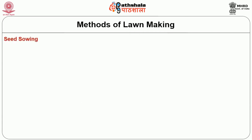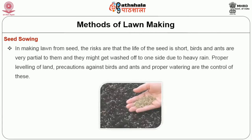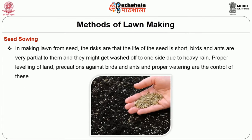First we will discuss about seed sowing. In making lawn from seed, the risks are that the life of the seed is short. Birds and ants are very partial to them and they might get washed off to one side due to heavy rain. Proper leveling of land, precautions against birds and ants, and proper watering are the controls for this.